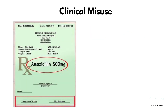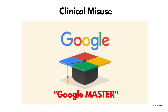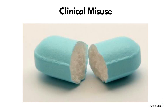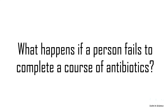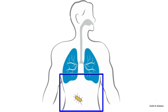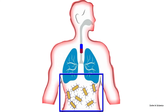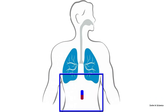Doctors prescribe a course of antibiotics based on a person's age, body weight, etc. Some people take half a tablet to be on the safe side, and some people discontinue the antibiotic if they feel better. If a proper antibiotic is used, antibiotics start killing the pathogen and gradually the disease is cured. If a person fails to complete a course of antibiotics, the pathogens will continue growing in the body causing disease.